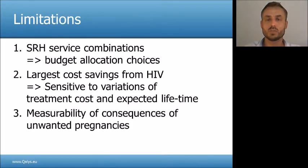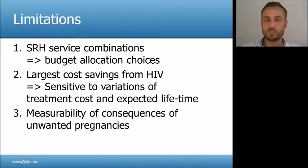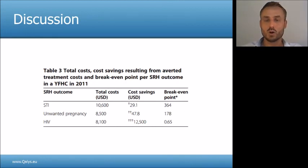The sexual reproductive health services are often a combination of services — for example, a pregnancy test and an STI consultation. The results are influenced by how costs are allocated between the sexual reproductive health services. The largest cost savings result from averted HIV infections. Therefore, the results are sensitive to variations in HIV treatment costs and the expected lifetime of patients infected with HIV. Finally, some cost consequences of unwanted pregnancies could not be measured in monetary terms.